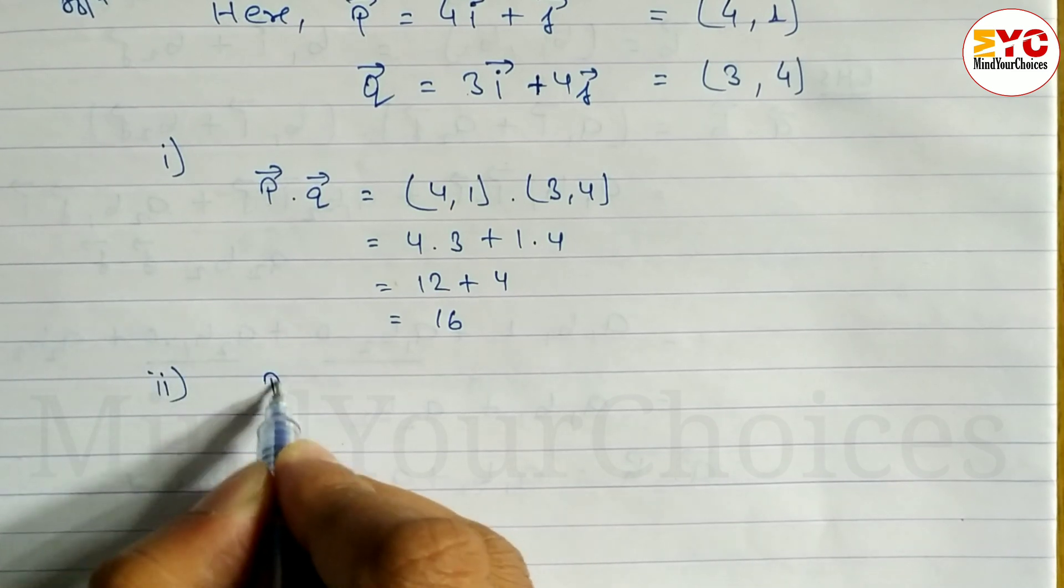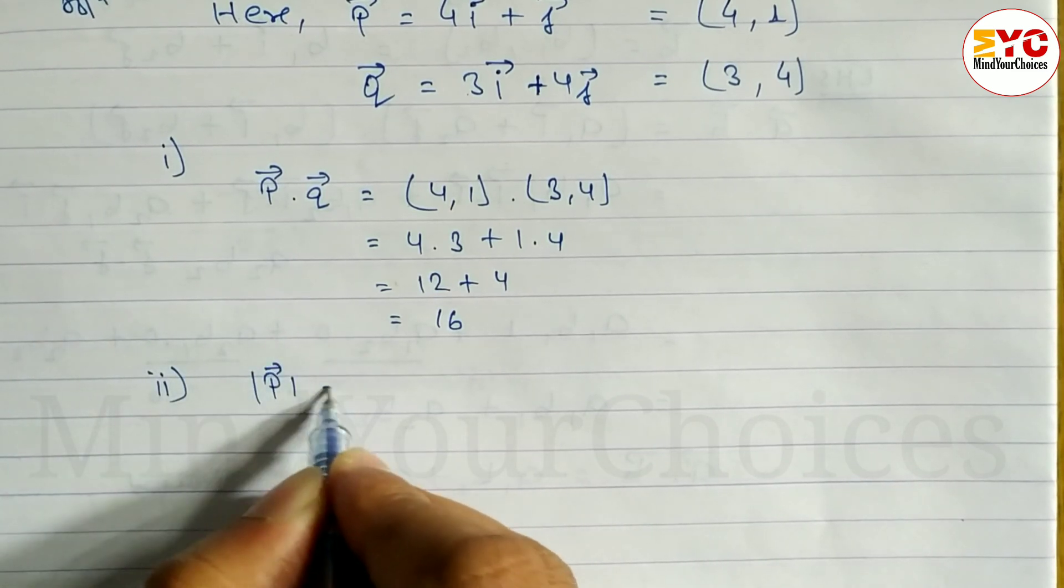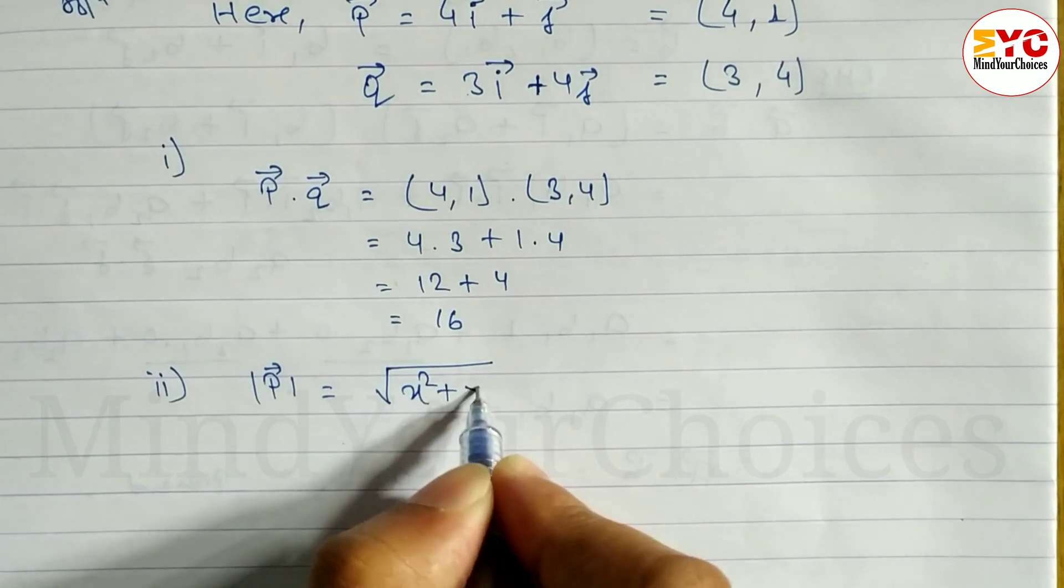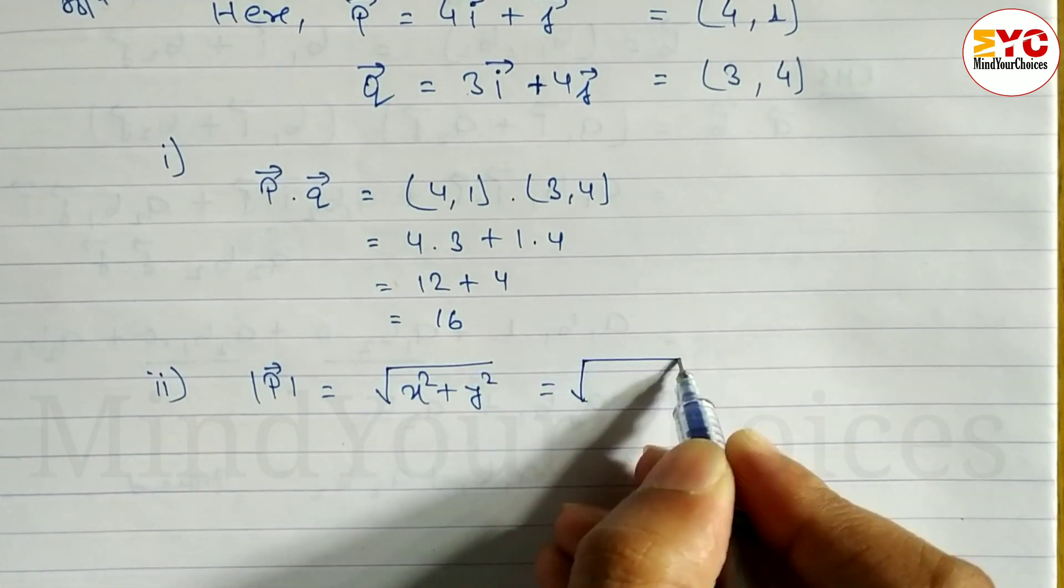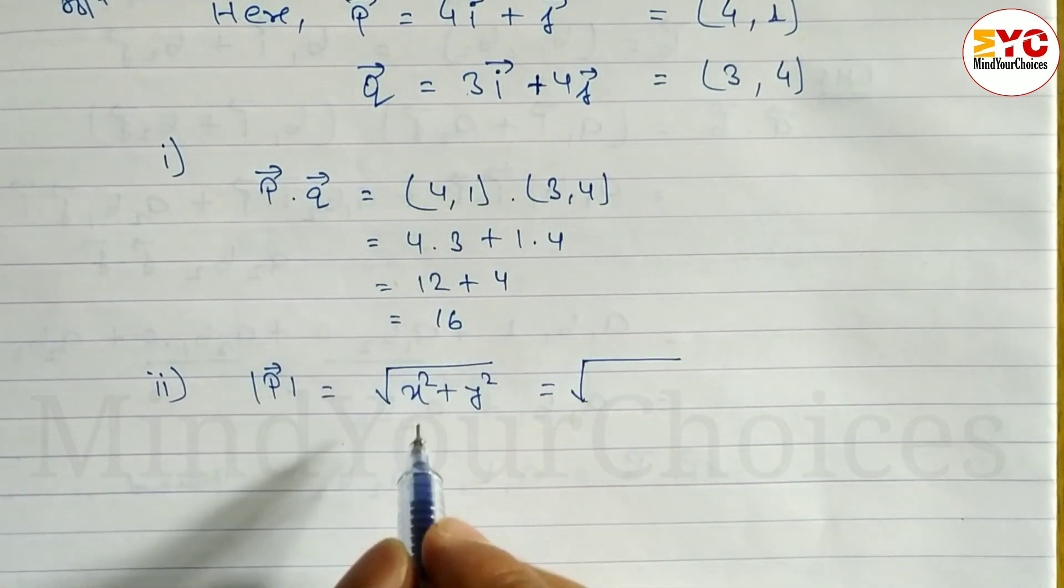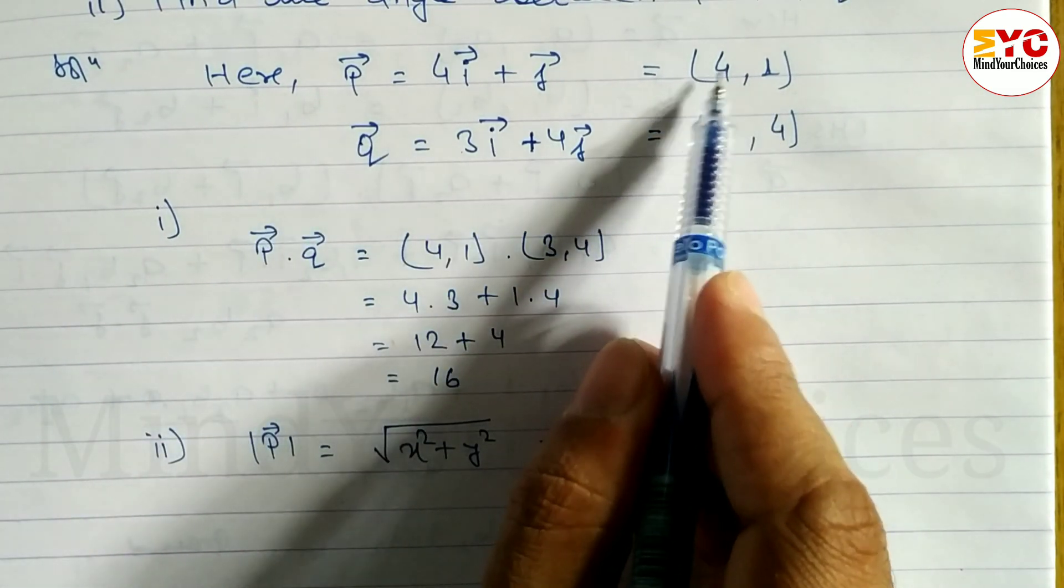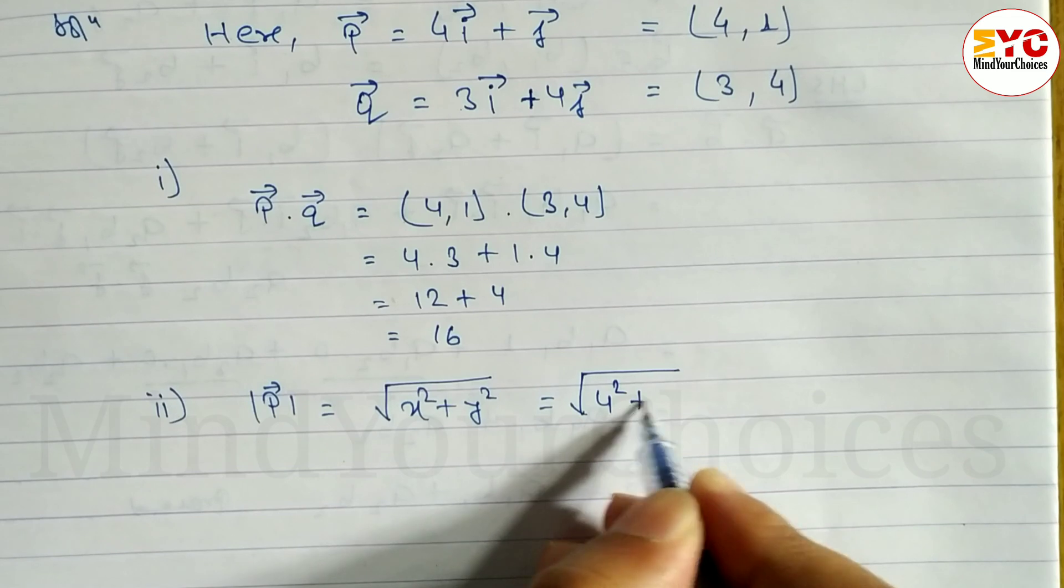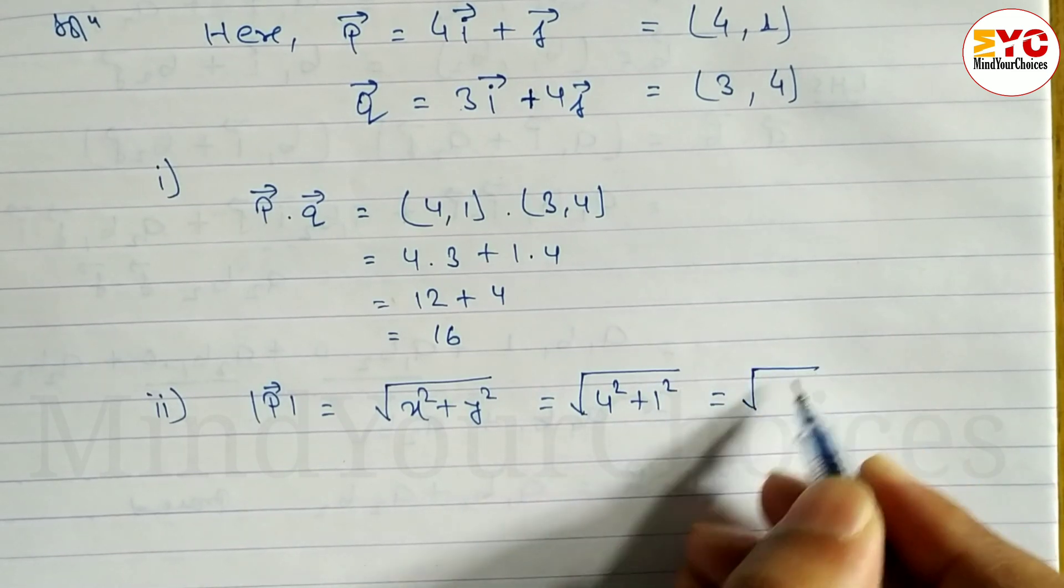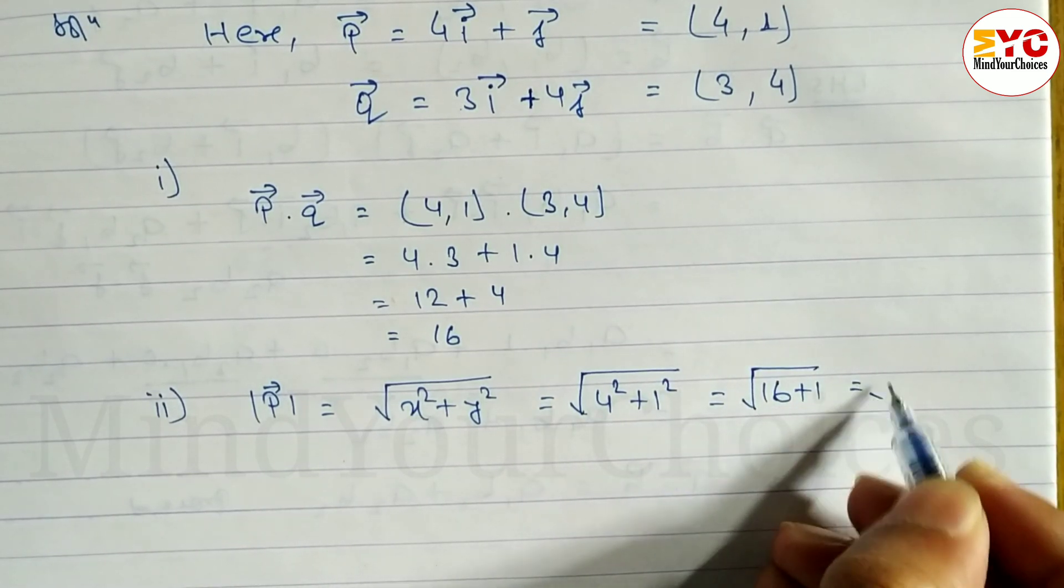Magnitude of P. The formula is root under x square plus y square. In P, x is 4 and y is 1. So we can write 4 square plus 1 square, equals 16 plus 1, equals root under 17.